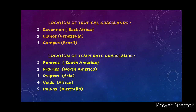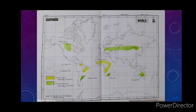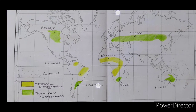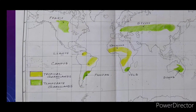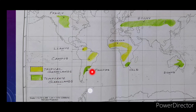Tropical grassland locations include: Llanos in Venezuela, and Campos in Brazil. Temperate grassland names include: Pampas in South America, Prairies in North America, Steppe in Asia and Europe, Veld in Africa, and Downs in Australia. These several names of temperate grassland are already given in your book. I have marked both types in yellow and light green colors on the map.